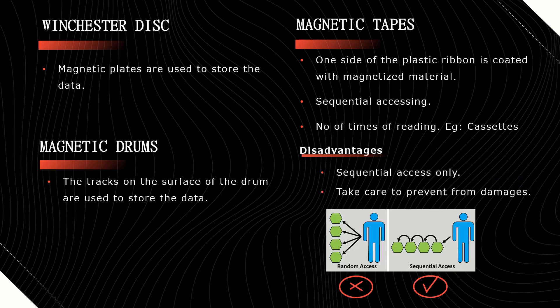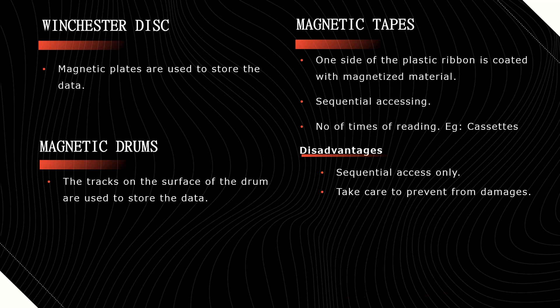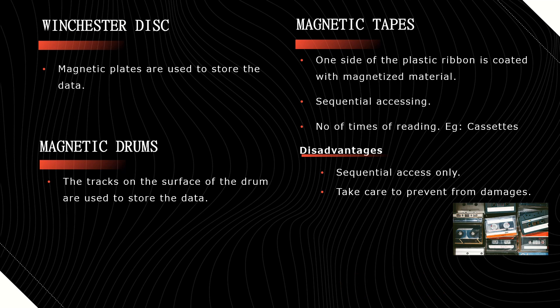Disadvantages. Sequential access only is possible here; we can't retrieve the data in a random access manner — only one by one we have to get the data. We also have to take care of these from environmental damage. If the cassettes are exposed to the environment they will be damaged, so to protect from these damages we have to take care of them.